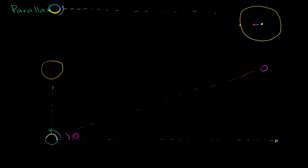So six months later when we look straight up, where is the star relative to straight up? Now the star will be to the right. So if this is our field of vision six months later, the sun is setting all the way to the right on the right horizon. And if we look straight up, this star now is going to be to the right of straight up. It looks like relative to straight up, the position of that star has actually shifted.